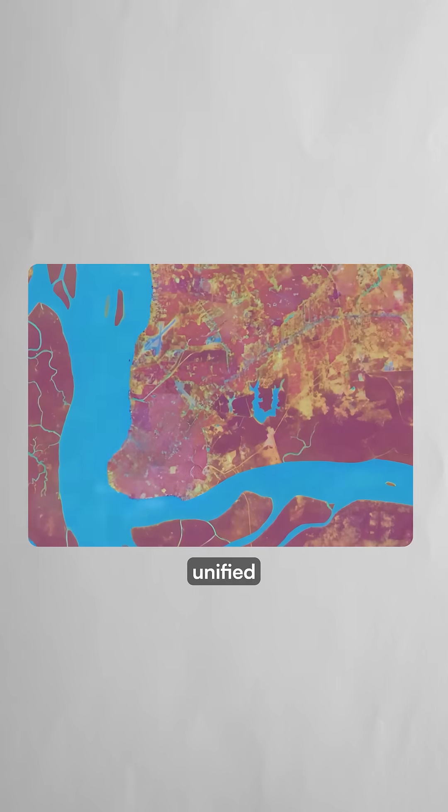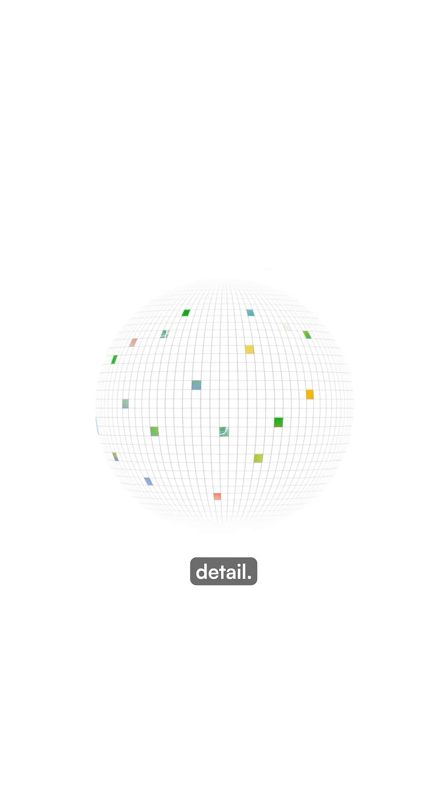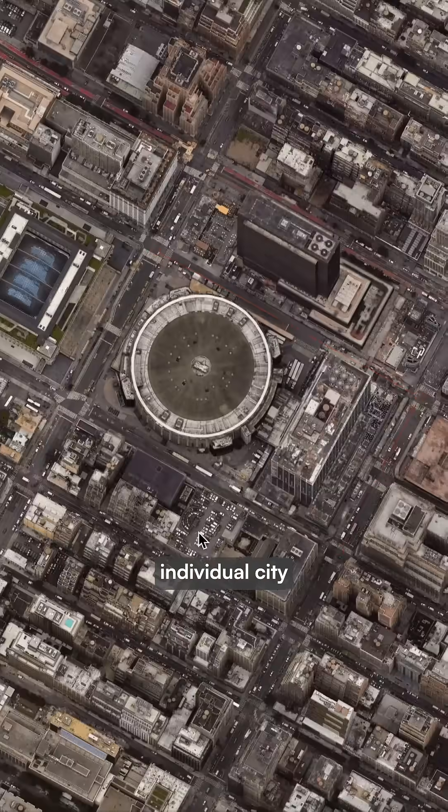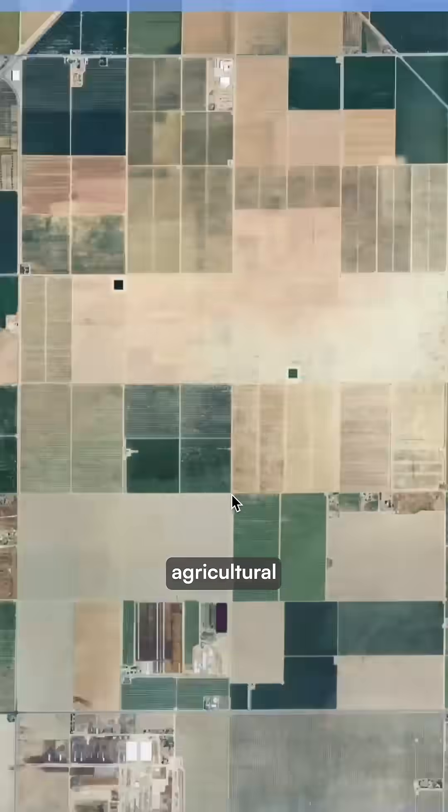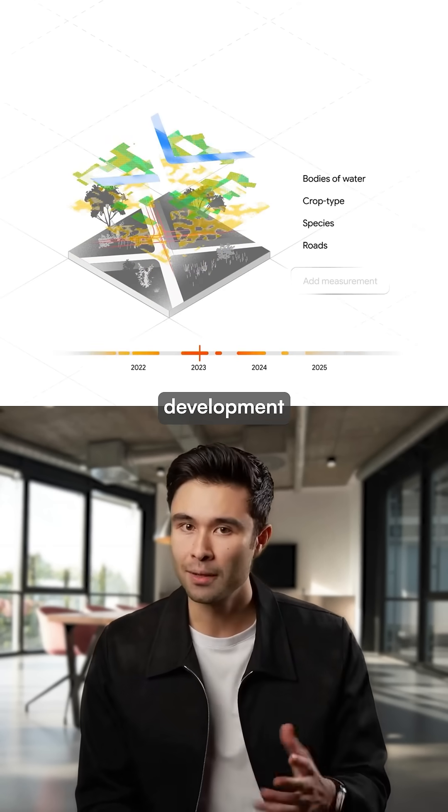It transforms data from dozens of satellite sources into a unified digital globe that captures every 10 square meters of Earth's surface with unprecedented detail. Scientists can monitor everything from individual city blocks to small agricultural fields, tracking changes like crop rotations and urban development in real time.